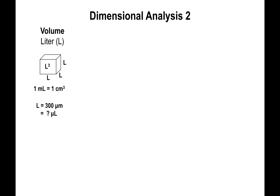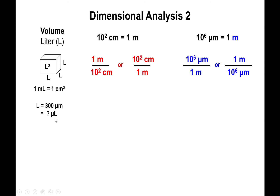The next problem deals with conversions from units of cubic length to liters. We have a cube with a length of 300 micrometers and we want to find the volume, where volume equals L cubed. One additional conversion factor to remember: one milliliter equals one cubic centimeter. This allows us to switch from the realm of cubic length into the realm of liters. We're ultimately converting to microliters.